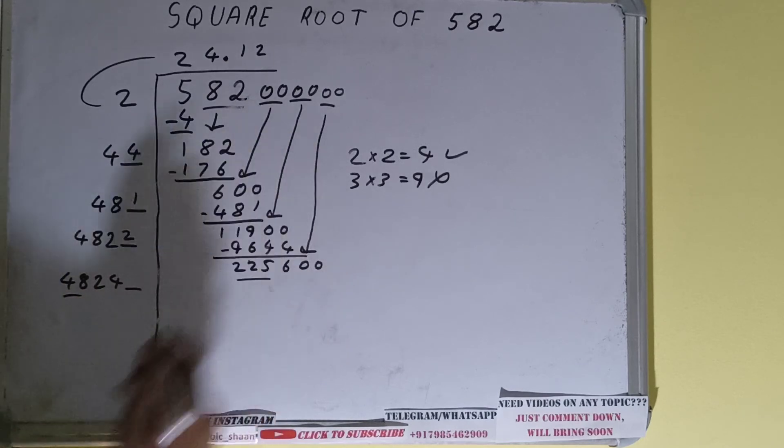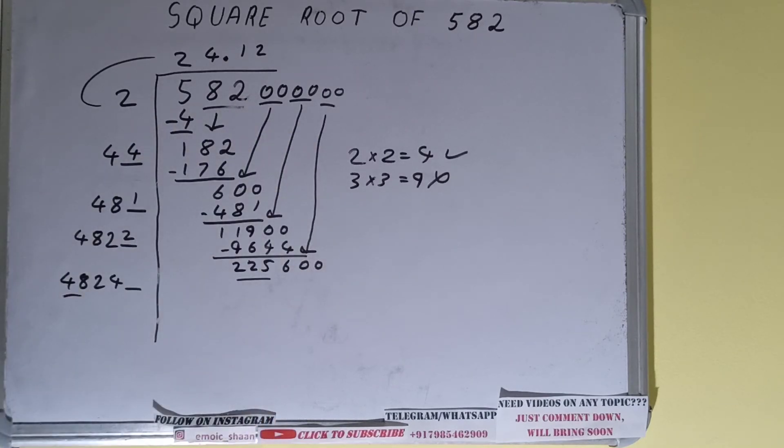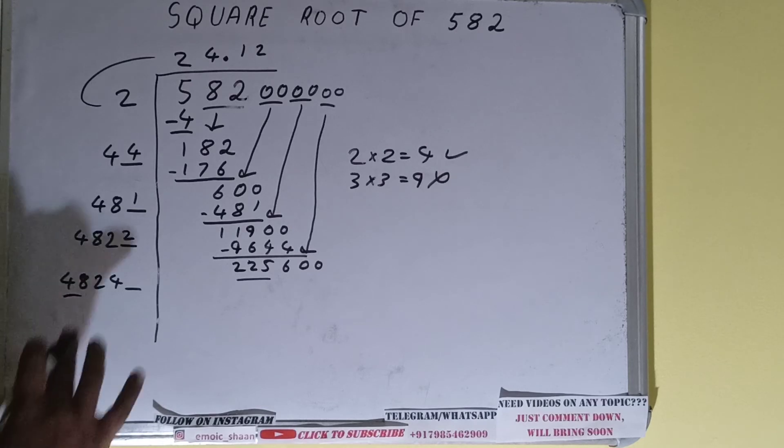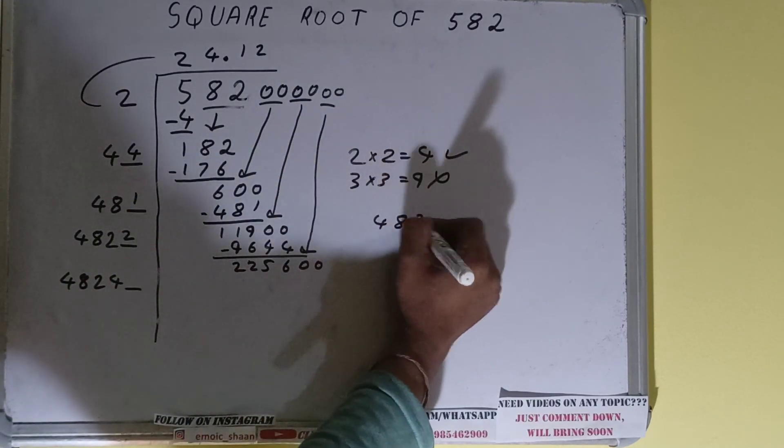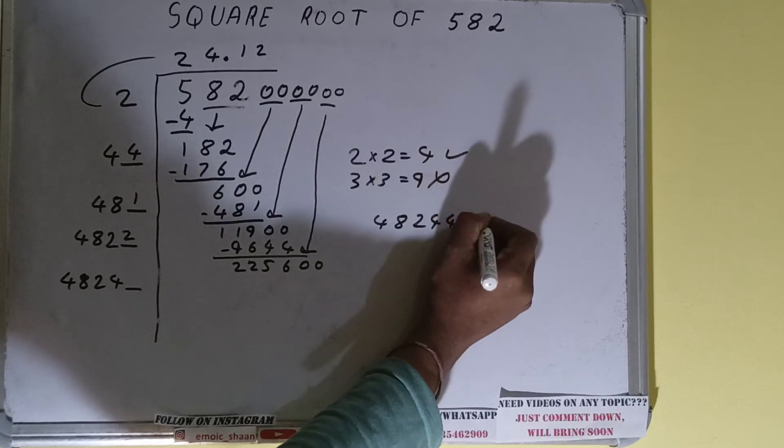Now compare 48 with 225. 48 times 5 is 240, so we cannot try 5 times. We have to try 4 times. So 4824 times 4 we can try.